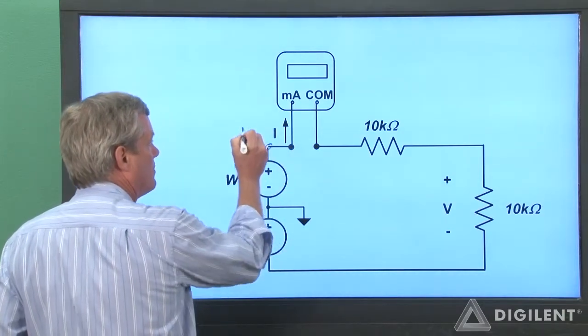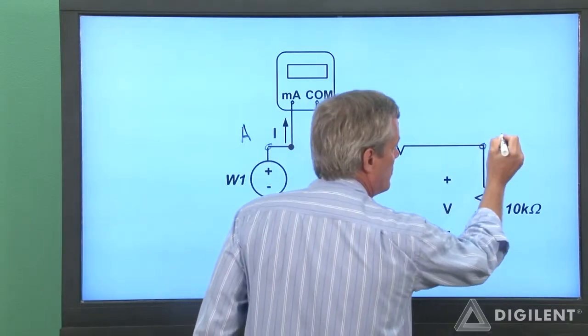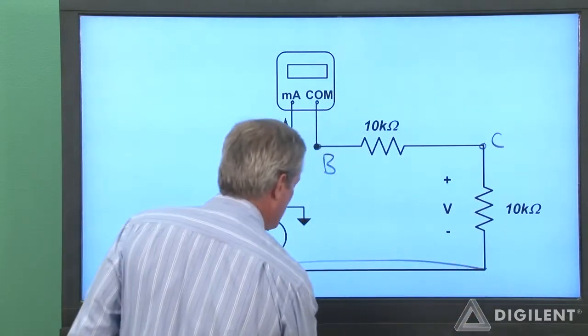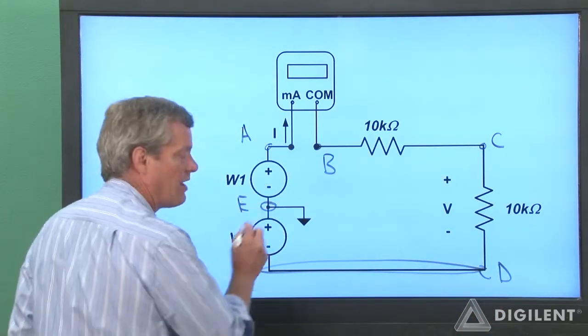Now we can identify our circuit nodes. I'll call this node A, this will be node B, node C will be here, this entire bottom area is node D, and node E will be ground.